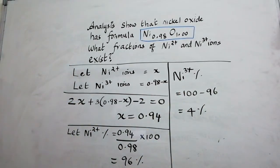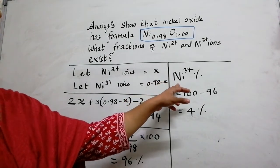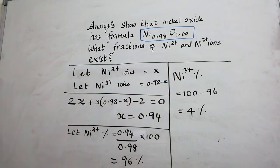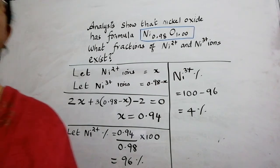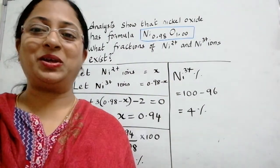So from this it is easy to find out nickel 2+ percentage and nickel 3+ percentage based on the given problem. And the name of the defect is metal deficiency defect. Hope you understood children. Thank you.